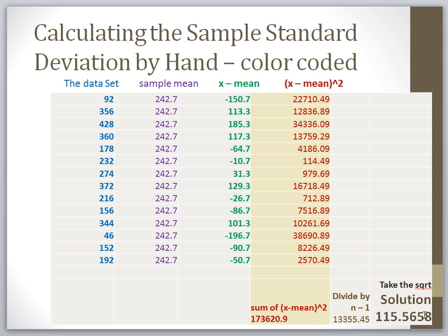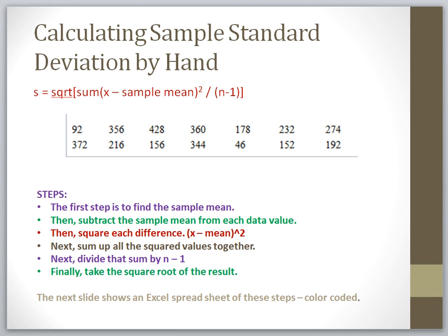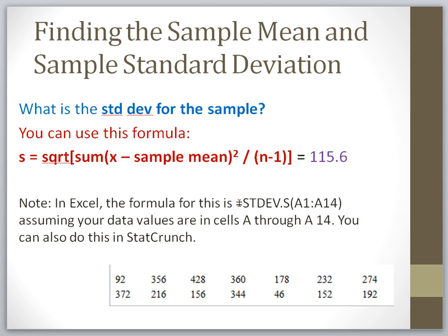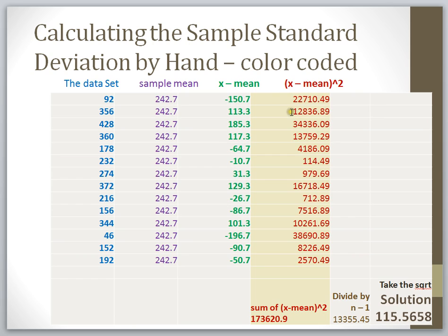There are several steps in doing this by hand, but if you do each step it's not difficult. You can also do this in Excel using the STDEV.S formula, which uses .S for sample standard deviation. I typed my data into cells A1 through A14, and this formula calculates the result. You can also use programs like StatCrunch. This example shows how you can take any sample data set and go through each step to calculate the sample standard deviation.